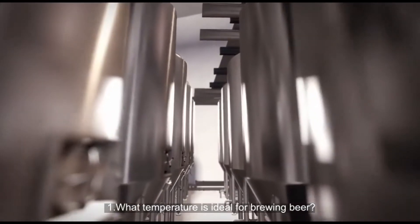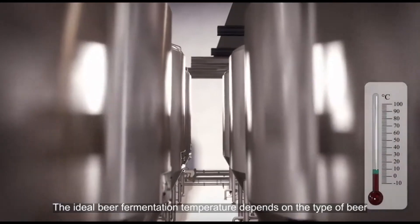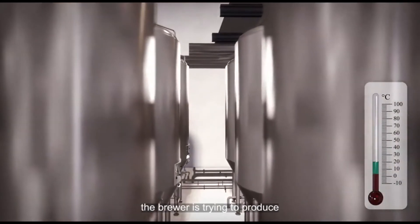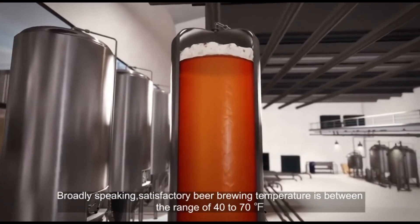What Temperature is Ideal for Brewing Beer? The ideal beer fermentation temperature depends on the type of beer the brewer is trying to produce. Broadly speaking, satisfactory beer brewing temperature is between the range of 40 to 70 degrees Fahrenheit.